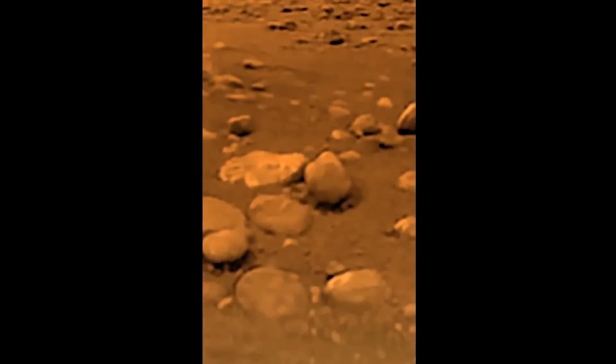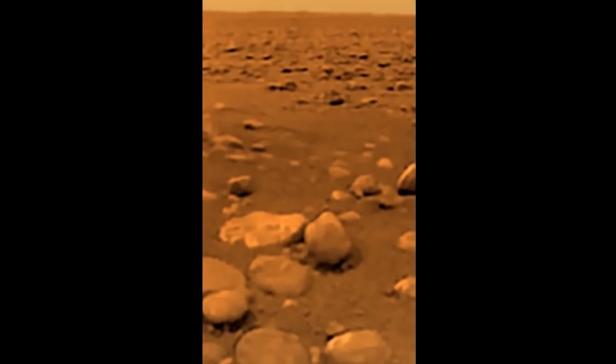Methane takes up about 4% of the atmospheric composition near the surface. It is known that methane in Titan's atmosphere should all be converted into other molecules through the interaction with sunlight within 50 million years. Since Titan is about 4.5 billion years old, that means that all of the atmospheric methane should have been long gone.